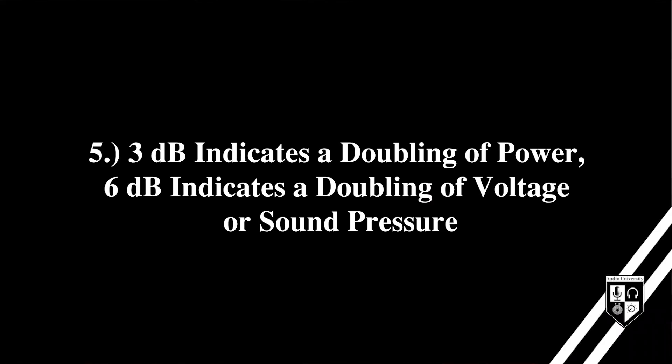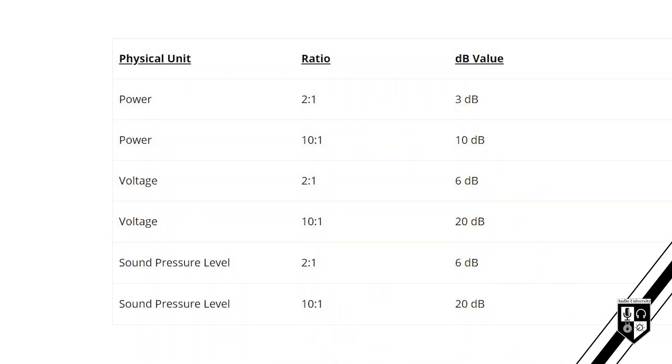It's hard to get a straight answer when asking someone how many decibels is a doubling, because it depends on what's being doubled. Non-power quantities must be made proportional to power in order to be represented in decibels. Following that logic, the decibel value used to describe a doubling in a power quantity is different from the decibel value used to describe a doubling of a non-power quantity. It's helpful to remember the decibel value for representing a 2-to-1 and 10-to-1 change in power, voltage, and sound pressure level. Use the reference chart provided.